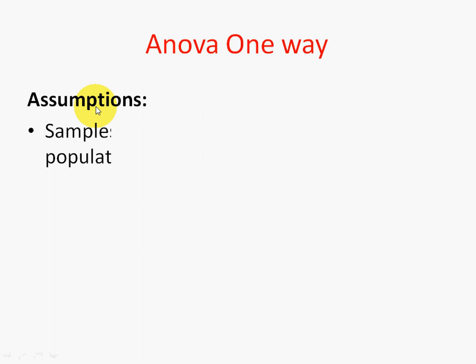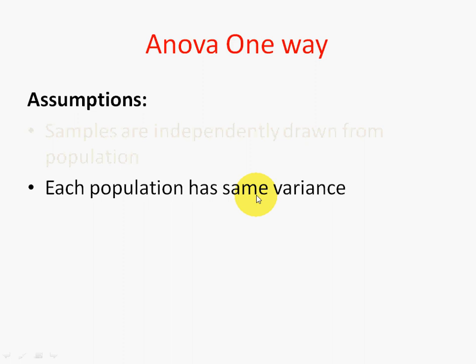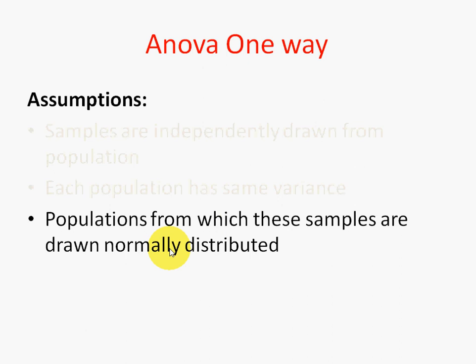What are the assumptions for ANOVA one-way? First, the samples should be independently drawn from the populations. Second, the populations should have the same variance — if you are choosing three samples from three populations, those three populations should have the same variance. Third, these populations should be normally distributed.